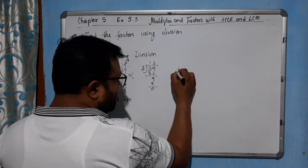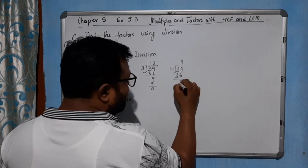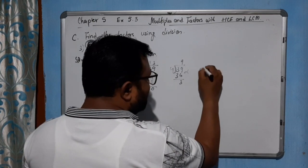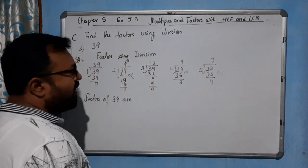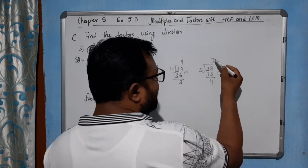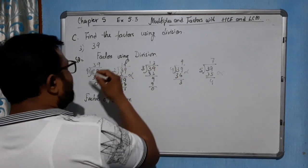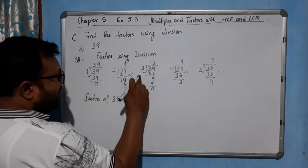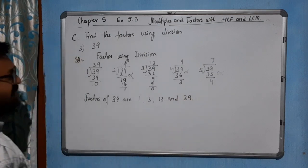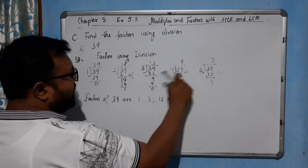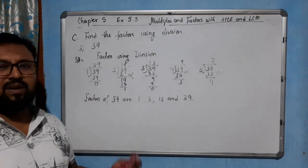By 4 — 4 times 9 is 36, remainder 3, not possible. By 5 — 5 times 7 is 35, remainder 4, not possible. By 6, 7, 8, 9 — all not possible. We return back to 13 and 39. So the factors of 39 are 1, 3, 13, and 39. Hope you understood this part. Thank you.